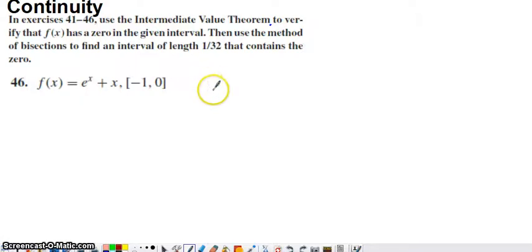So here's a problem that asks us to verify whether or not a function has a zero on a given interval using the intermediate value theorem. I'm not going to go through the second part of this set of directions here. I'm just going to use the intermediate value theorem to verify the existence of a zero.